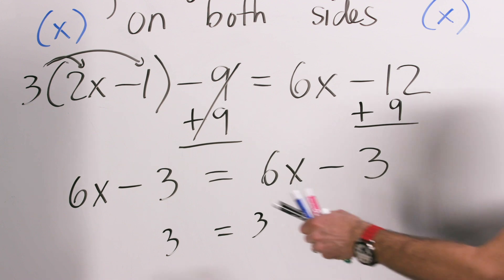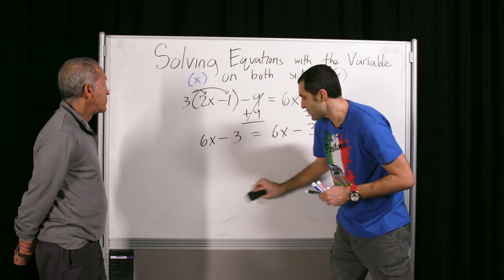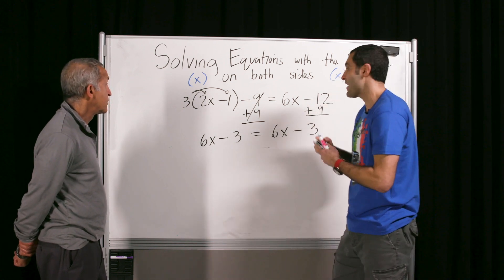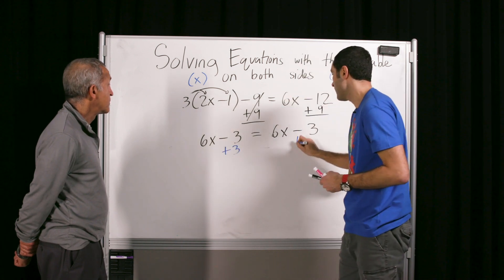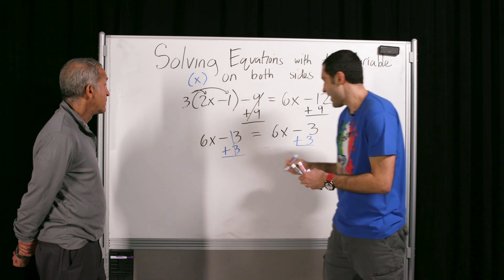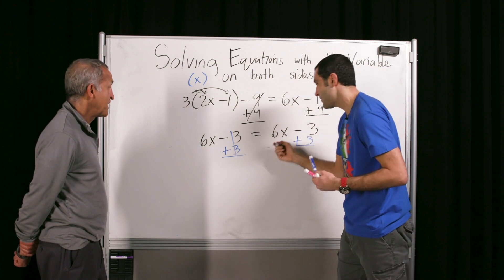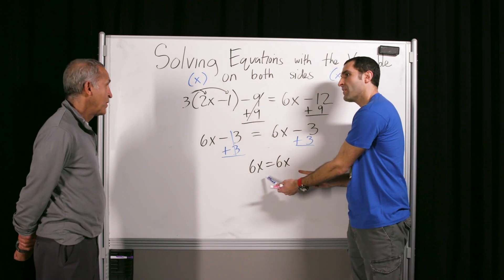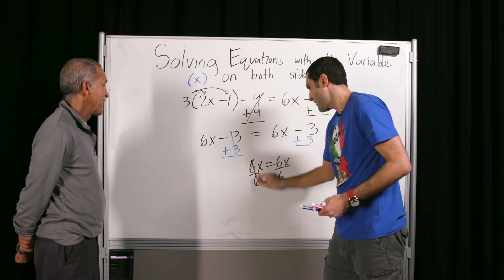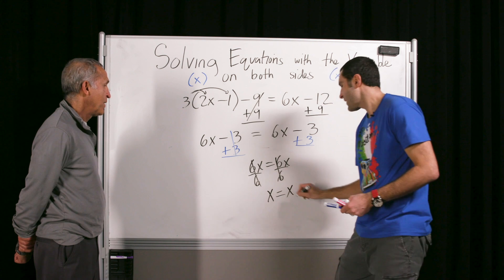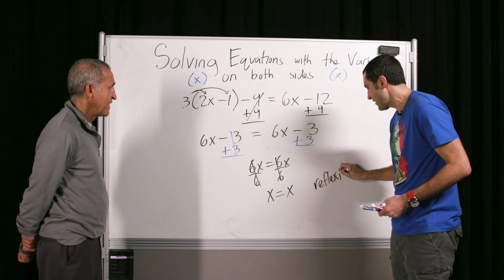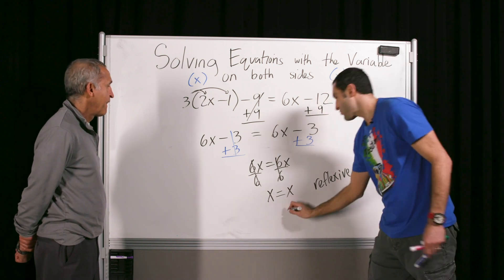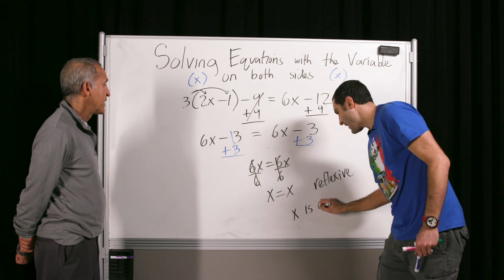We don't necessarily need to see this right away. What some people enjoy doing is getting more direct proof. We could add three to both sides — boom. These go, and then we get six x equals six x. Divide by six, and how often is x equal to itself? Always. So we call this the reflexive property — like x is looking at its reflection. The true answer is that x is any number — all real numbers.